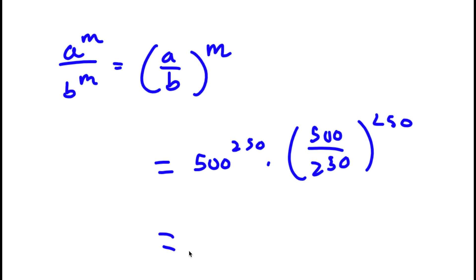And 500 over 250 is simply equal to 2, so I find 500 to the power of 250 times 2 to the power of 250.